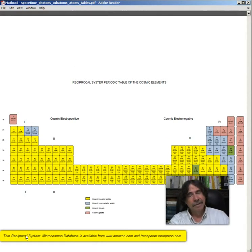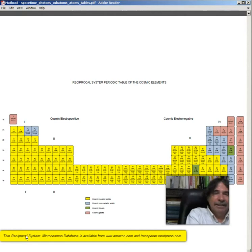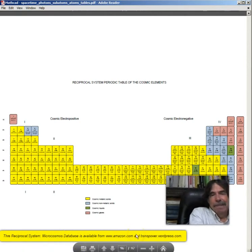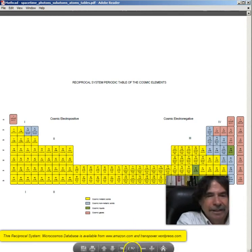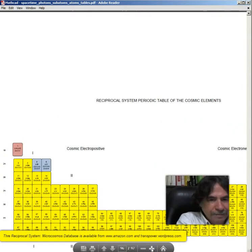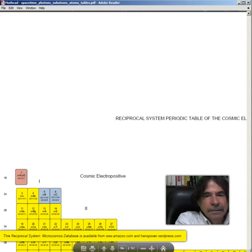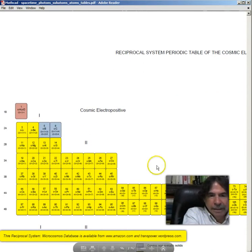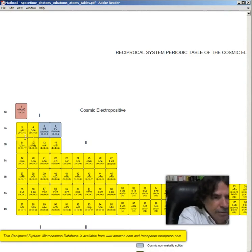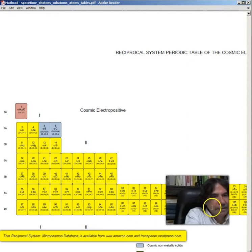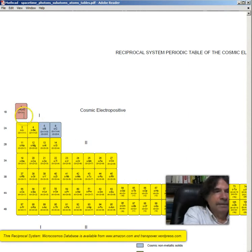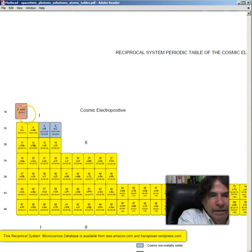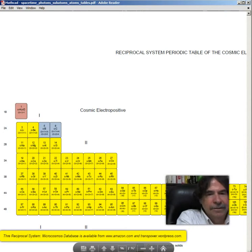Alright, now we come to the reciprocal system periodic table, the cosmic elements. And as you might expect, it looks pretty much like what the material elements look like. So let's just zoom in. So the cosmic electropositive here, and you can see we have parentheses around everything, because these are all space displacements.